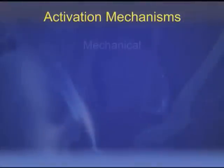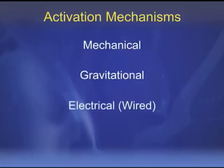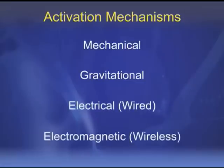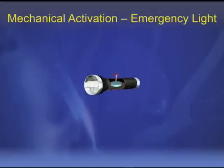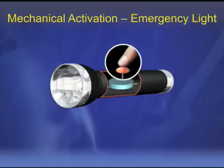The smart nanobattery can be activated in four ways: mechanically by pressing a button, gravitationally by rapid acceleration, electrically as part of a wired system, or electromagnetically as part of a wireless system. Pressing a button to turn on a flashlight is an example of mechanical activation.